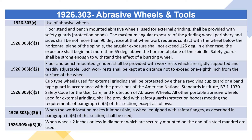1926.303(c)(2): Floor and bench mounted grinders shall be provided with work rests which are rigidly supported and readily adjustable. Such work rests shall be kept at a distance not to exceed one-eighth inch from the surface of the wheel. 1926.303(c)(3): Cup type wheels used for external grinding shall be protected by either a revolving cup guard or a band type guard in accordance with ANSI B7.1-1970. All other portable abrasive wheels used for external grinding shall be provided with safety guards meeting the requirements of paragraph (c)(5) of this section.